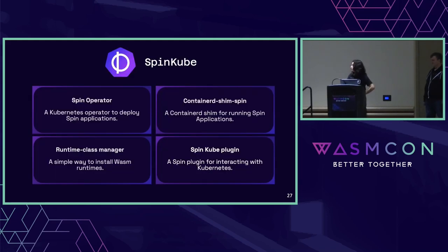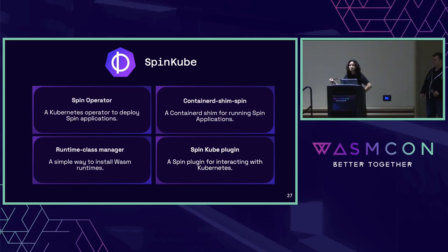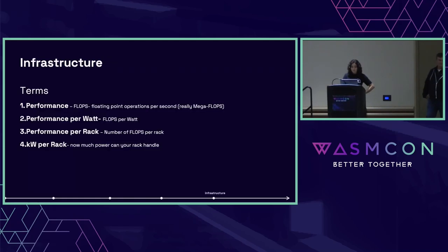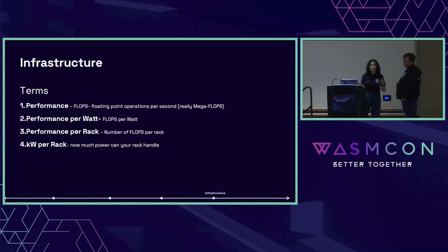A little bit about SpinKube. It's those four projects, powered by a containerd shim — essentially we're telling containerd to execute WebAssembly instead of containers under the hood. At the top level is a Spin operator, because Kubernetes loves operators, making it so you can declare in YAML what you want running on your Kubernetes cluster. Now that we've talked about where you can put this, let's go to the fourth part of our green software stack: the architecture.